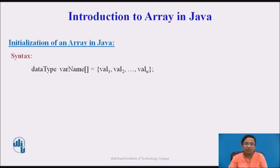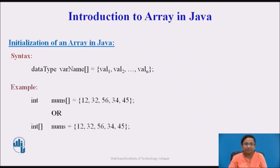Next is initialization of array in Java. While declaring an array, we can initialize it by specifying element values separated by commas in curly brackets. Data type specifies which type of data is stored; var name specifies the name of the array variable; and values val1 to valN indicate the values assigned to the array at the time of initialization.